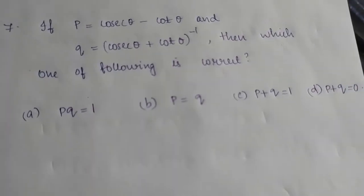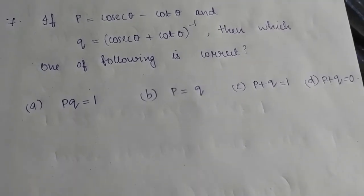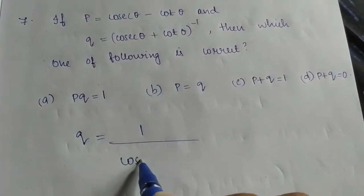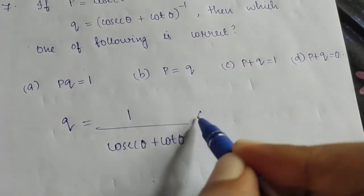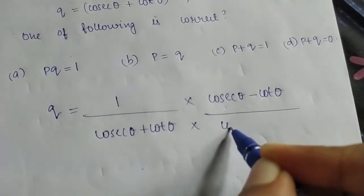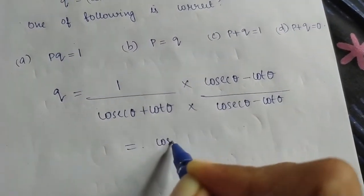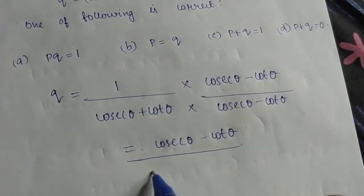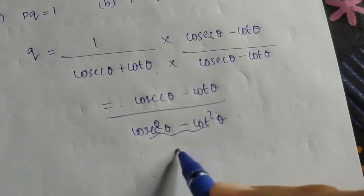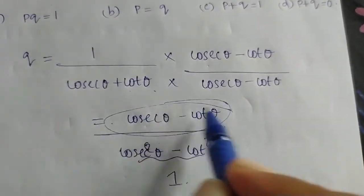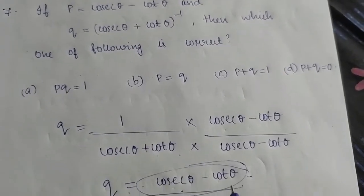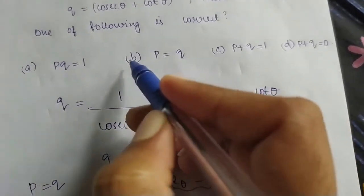The next question involves p and q. The equation is 1 over cos θ plus cos θ. We multiply both sides by q: cos θ minus cos θ terms appear. After multiplying through and simplifying, we find p equals q, which satisfies Option B. Option B is the right answer.